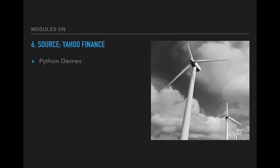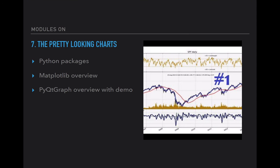From there we get into the charts that everybody wants. I'm going to introduce you to probably the two Python packages I like. The most popular one is Matplotlib — we'll give you an overview, and the arbitrage strategy section will go deep on that. The other charting package that a lot of people don't know about is PyQTGraph, which uses QT. I'll show you some Python demos with that as well.